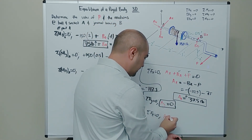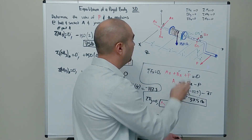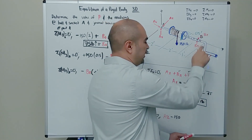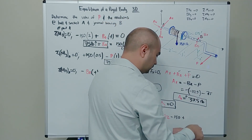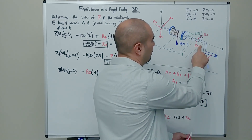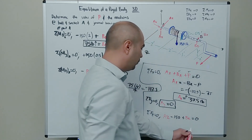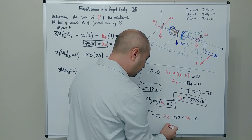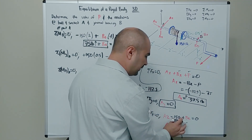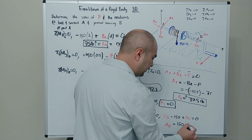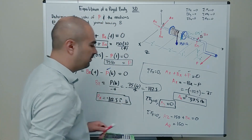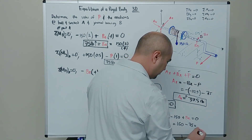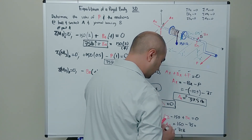Sum of forces in the Z-direction equals zero: Az − 150 + Bz = 0. Solving: Az = 150 − Bz = 150 − 75 = 75 pounds. So Az = 75 lb pointing up.